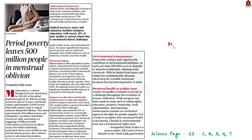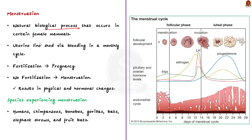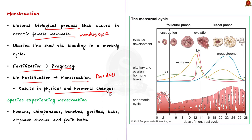This article is about menstrual health, covering aspects like menstrual stigma, period poverty, and its impacts on health and education. Menstruation is a natural biological process occurring in certain female mammals including humans — a monthly cycle in which the lining of the uterus is shed through bleeding. During menstruation, the uterus prepares for potential pregnancy. If fertilization occurs, pregnancy begins; if not, the uterine lining, blood and tissue are shed through the vagina. Some other mammals including chimpanzees, bonobos, gorillas and certain bat species also undergo a similar process.